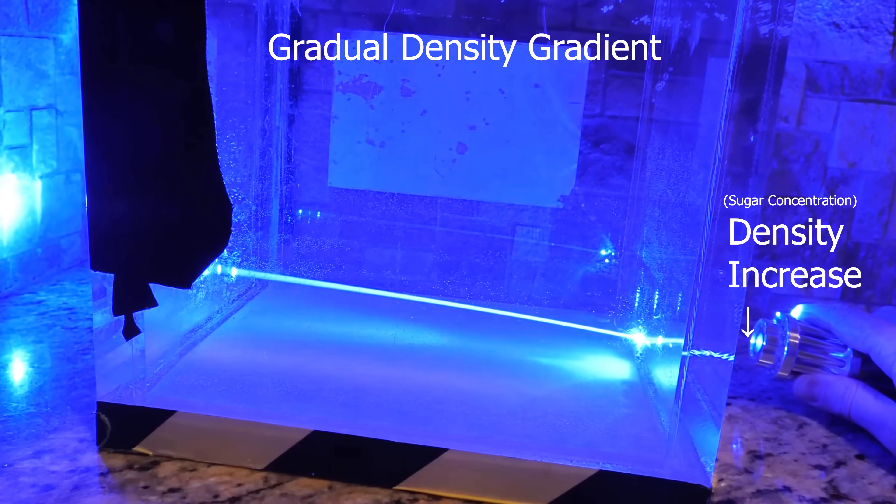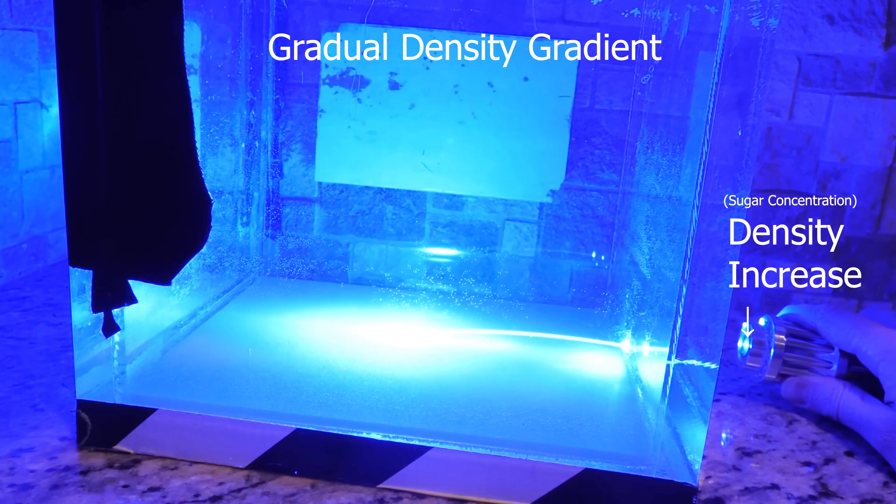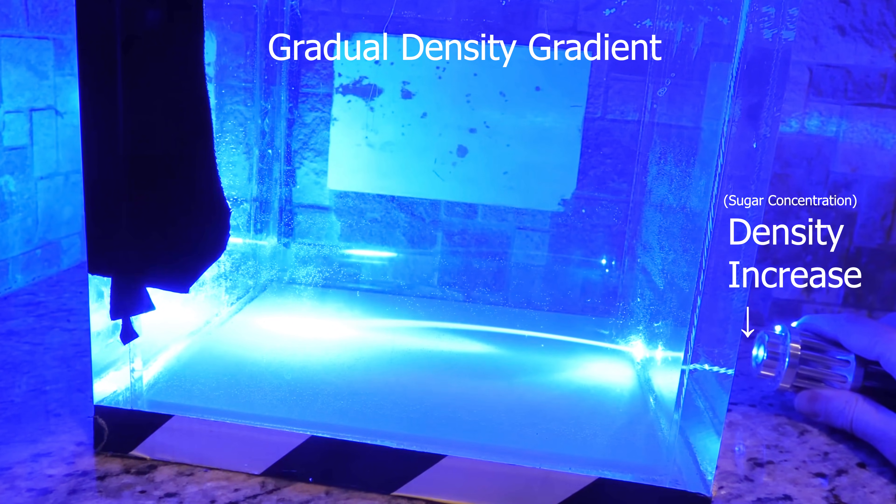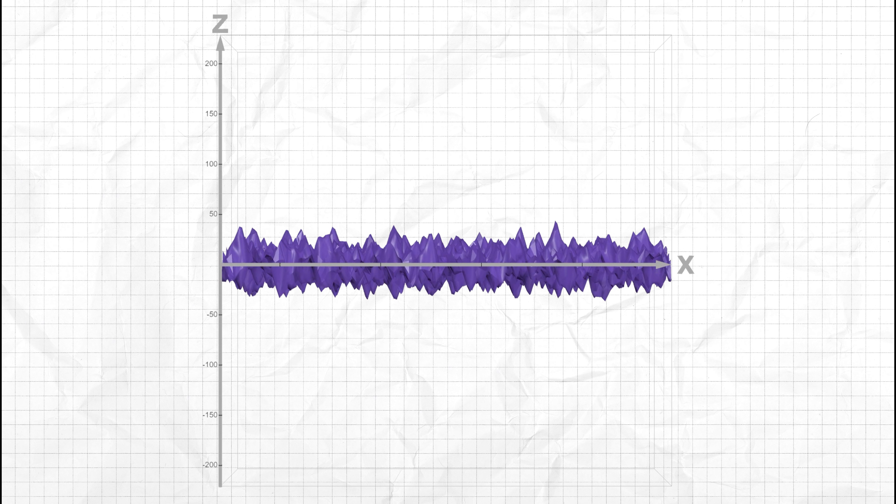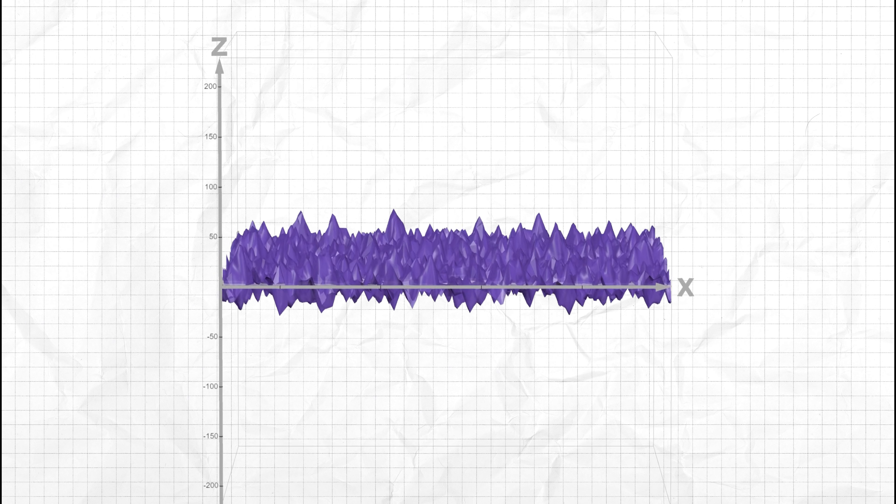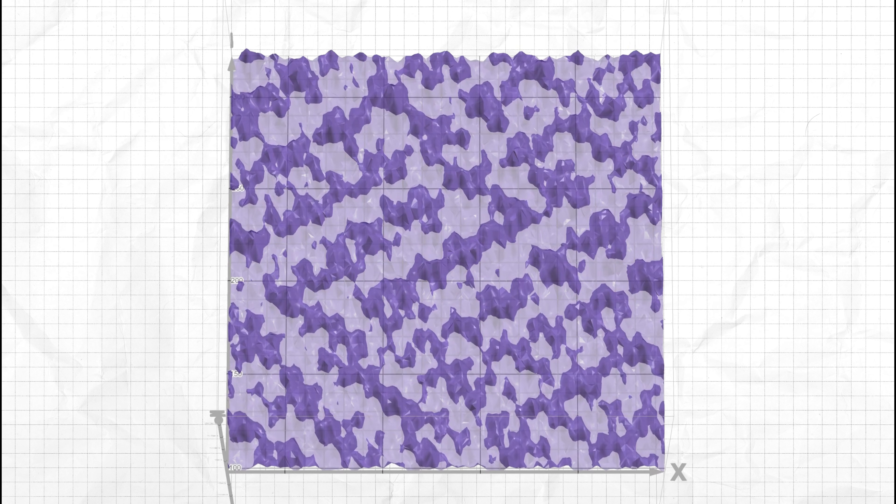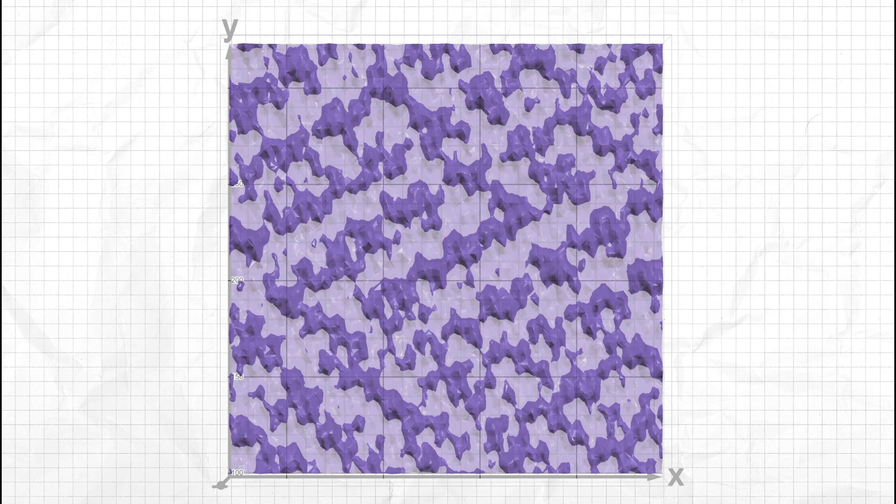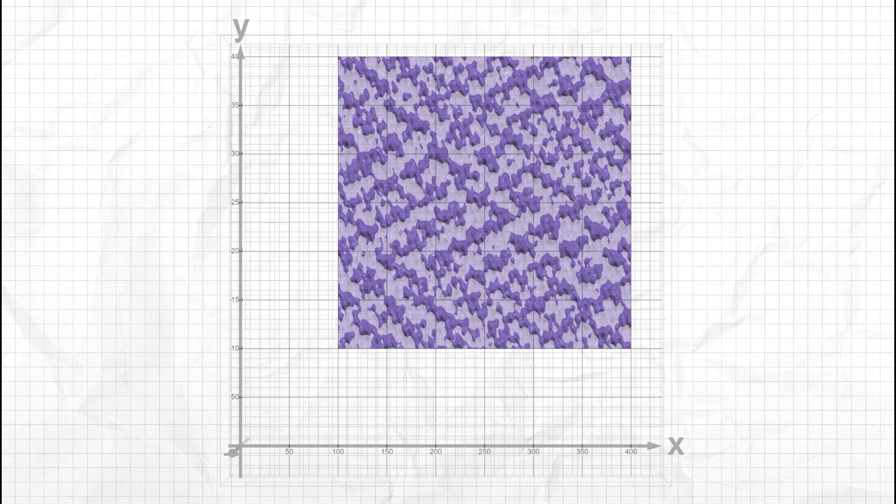But now imagine that instead of one gradient of density from high to low, you had random variations of density like this. So imagine I have some material where the density varies according to this graph here, where the z-axis up is density or refractive index, and it's spread out over a 2D plane like this.